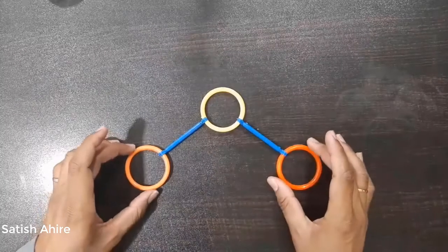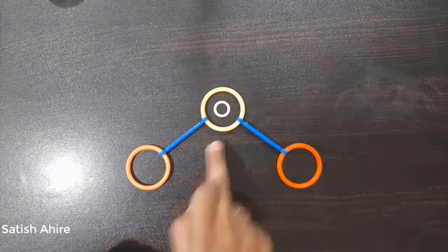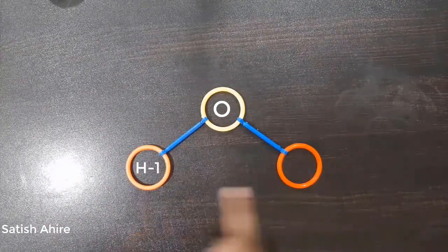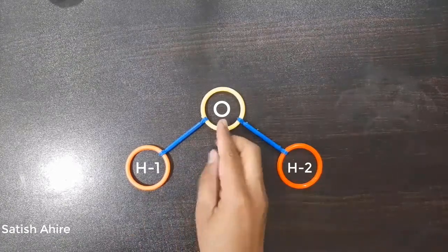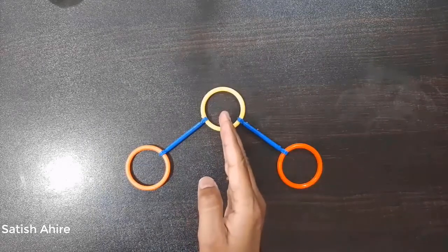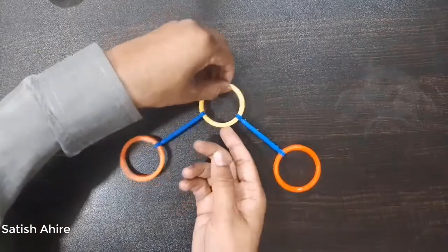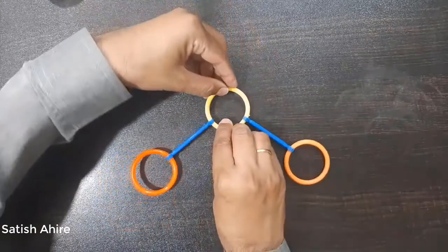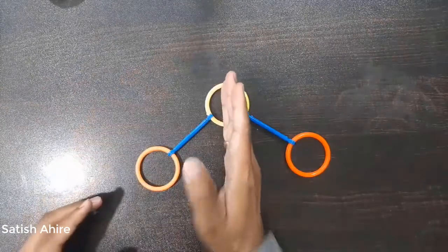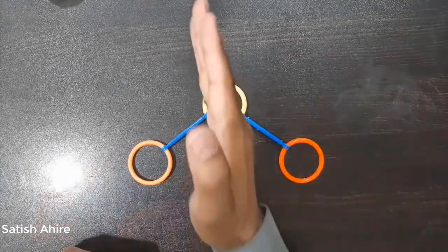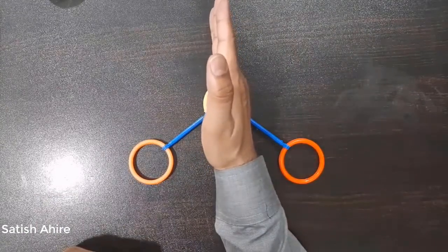This is the 3D model of a water molecule, where this one is the oxygen atom, this is the first hydrogen atom, and this is the second hydrogen atom. If I rotate this molecule to get an equivalent configuration, it represents the presence of a C2 axis. Therefore, the principal axis in this case is C2.